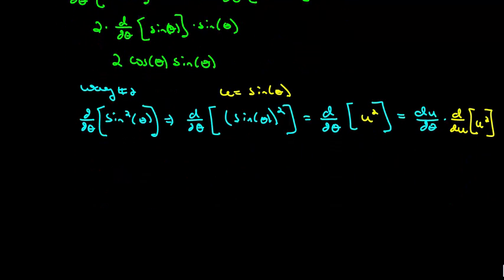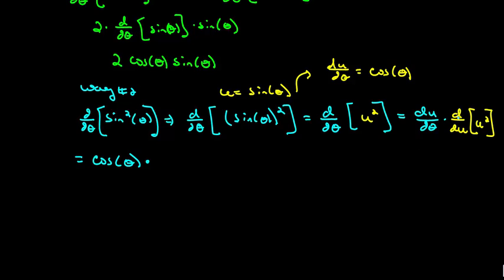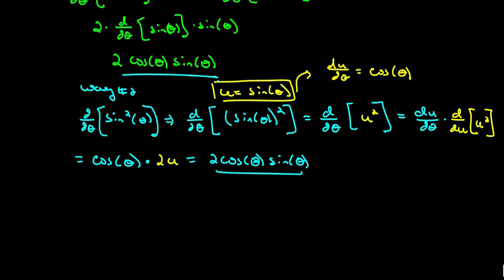Using the chain rule here: du/dθ comes from the derivative of sine theta with respect to theta, which is cosine theta. And d/du of u squared is just 2u. Since u equals sine theta, we substitute back to get 2 cosine theta times sine theta. Notice we got the same value — one way using the product rule, the other using the chain rule.